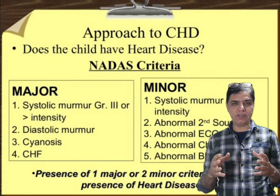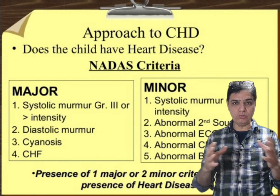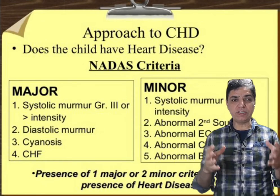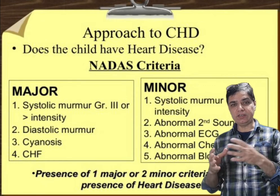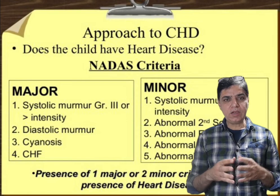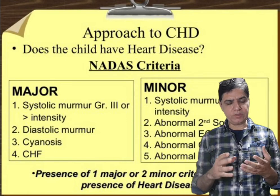NADA's criteria is basically divided into two criteria. One is a major criteria and the other is the minor criteria. The major criteria includes four things.